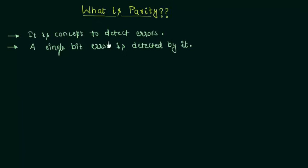Parity is a concept to detect errors. Error detection and its elimination is a very vast field in electronics, and engineers and scientists constantly work on this field because we want the signal transmitted as it is at the receiver's end. We do not want any distorted signal at the receiver's end. So parity is one way to detect errors, and it is only for the detection of a single bit error.